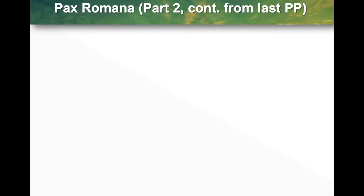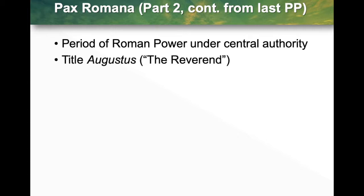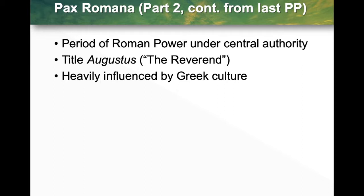From the last PowerPoint, we looked at Pax Romana Part 1. Now we continue with Pax Romana Part 2. Remember, Pax Romana means Roman peace — a period of Roman power under central authority, basically where the emperor controls and rules. The title Augustus was given — it means 'the reverend,' a title of reverence, and others were called that too, not just Caesar Augustus. The Roman Empire was also heavily influenced by Greek culture.